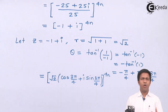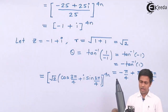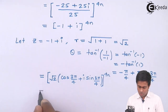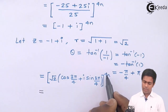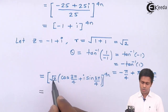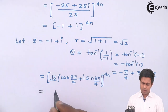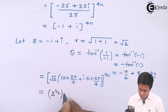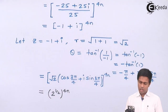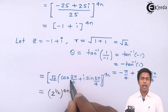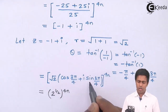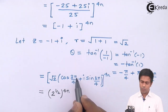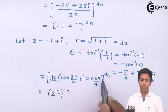The number is now in polar form with power 4n. By De Moivre's theorem, we bring the power inside: r becomes (2^(1/2))^(4n) and the angle multiplies: cos(3π/4 · 4n) + i sin(3π/4 · 4n). The 4s cancel giving cos(3πn) + i sin(3πn).